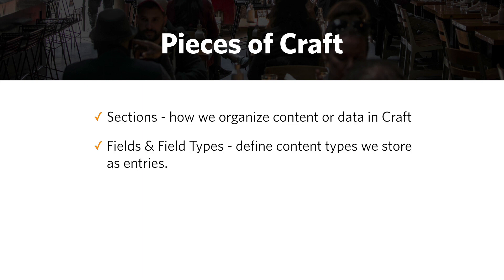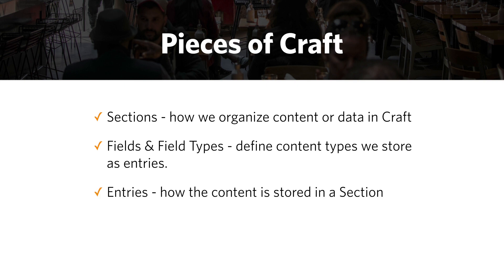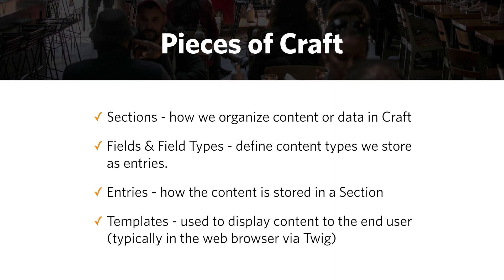So those are the pieces of Craft. We have sections for how we organize content or data in Craft. Then we also have fields and field types — this is how we define content types that we store as entries, where you take your content requirements and begin to model them in Craft. Then we have entries, which is how content is stored in a section; each individual entry is a piece of content made up of one or more fields. And then we have templates, which is how we display content to the end user, typically in the web browser via Twig.